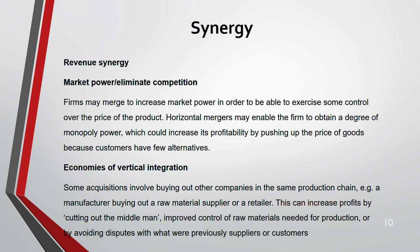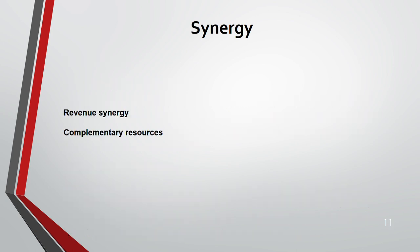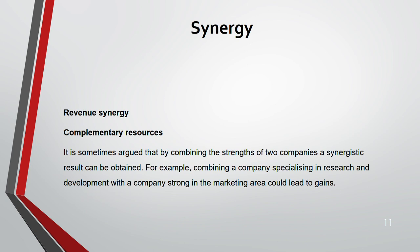Through vertical integration, because the middleman is cut, the profits that previously went to the middleman now come to you. You can also control the supply of raw materials and avoid disputes with suppliers or customers, achieving more sales and hence revenue synergy. Third, complementary resources: using the strengths of two companies together you can achieve synergy. For example, one company specialized in R&D and the other strong in marketing — combine both to achieve great revenues.